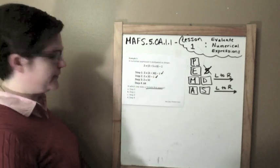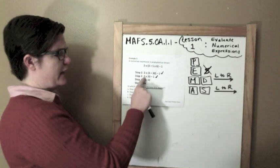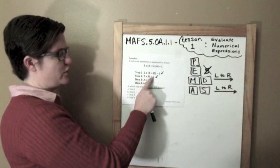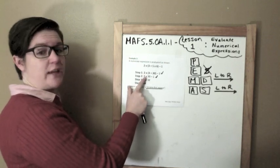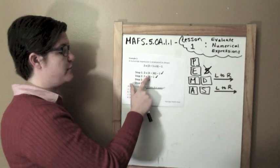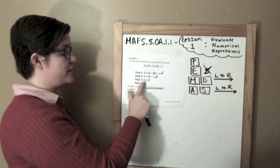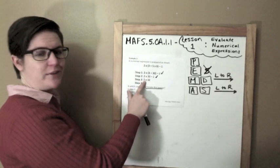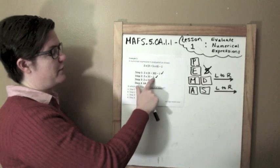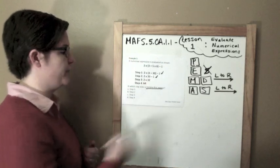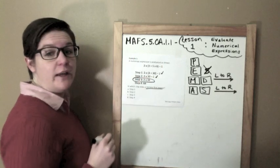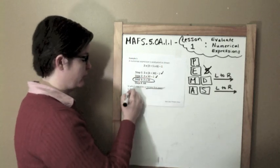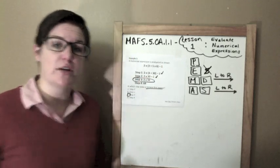All right, next, we have multiplication. We have subtraction. Multiplication should come first. So 2 times 33 would be 66, but that's not what this person did. They did 33 minus 1 first and got 32. So step 3 is where the first error was made. So C is your answer.